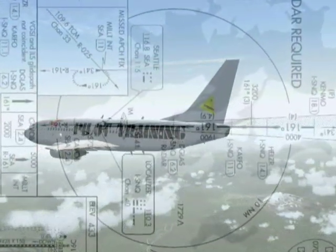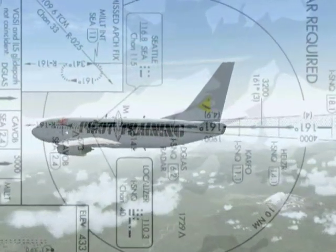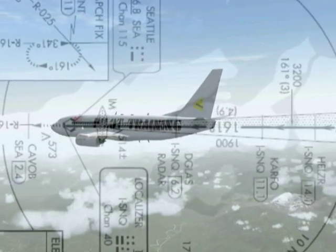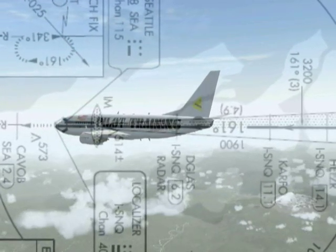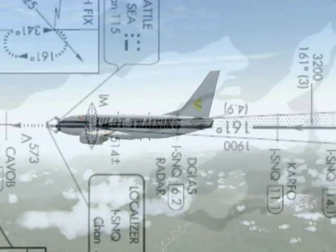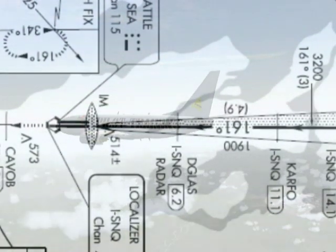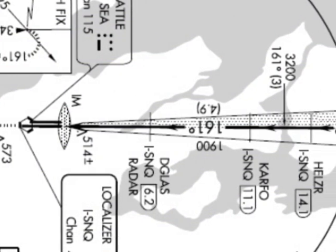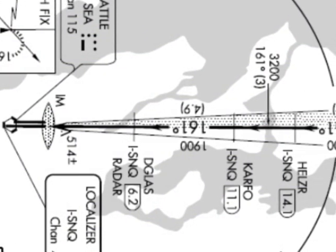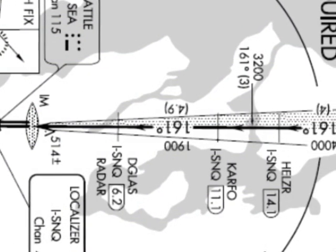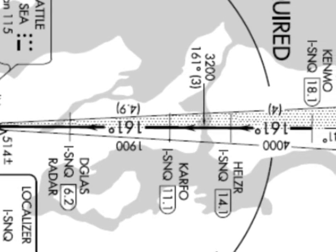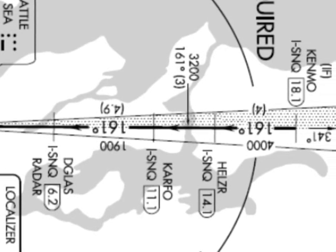You've probably seen approach plates in magazines, books, or in online articles, but have never thought to use them in your flights and flying because you thought they weren't needed, or perhaps you were confused by all the data, arrows, numbers, circles, and symbols that look as if someone added them only to confuse you even more.